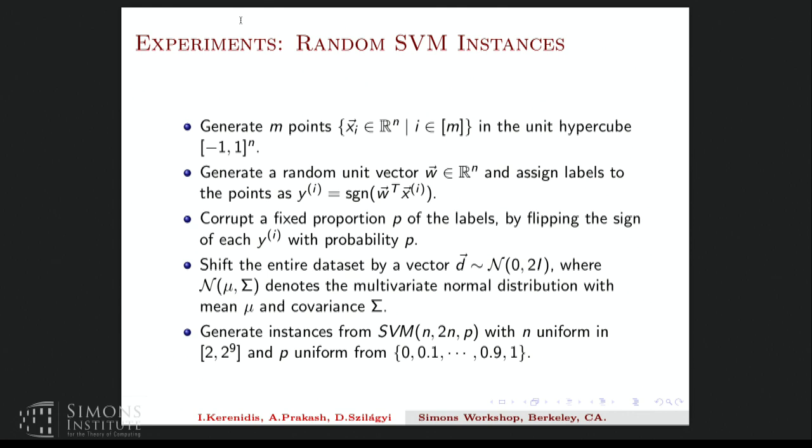Okay, so now I'll talk about the experiments and what kind of speed ups one can hope to get out of these quantum interior point methods for SOCPs. So the experiments we carried out were on random SVM instances. So I'm going to define what a random SVM instance is on this slide. So first we generate the data points. So we generate m of these points from the unit hypercube uniformly at random. And then we generate a random vector in R^n which is supposed to classify these points. And the labels are assigned as y_i as the sign of W transpose x_i. Then we corrupt a fixed proportion of the labels so that the data set is not exactly classifiable and shifted by a normal distribution.